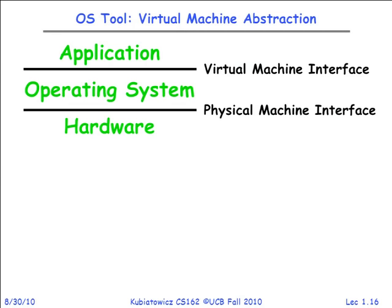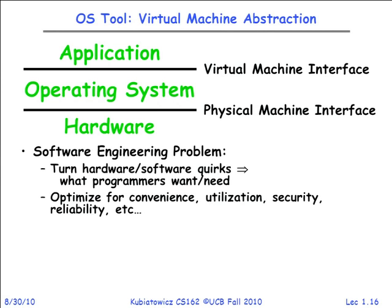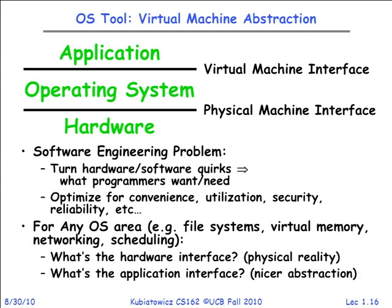We're turning hardware-software quirks into something the application user wants, optimizing for convenience, utilization, security, and reliability. This OS interface will be much more stable than the hardware interface. For any OS area — file systems, virtual memory, networking, scheduling — ask yourself: what's the hardware interface, what's the application interface? Compare those two and you have a good idea what's happening in between. A stable interface like the x86 instruction set stayed for 20 years and let software folks rely on it. Interfaces are as much about history as about engineering elegance.